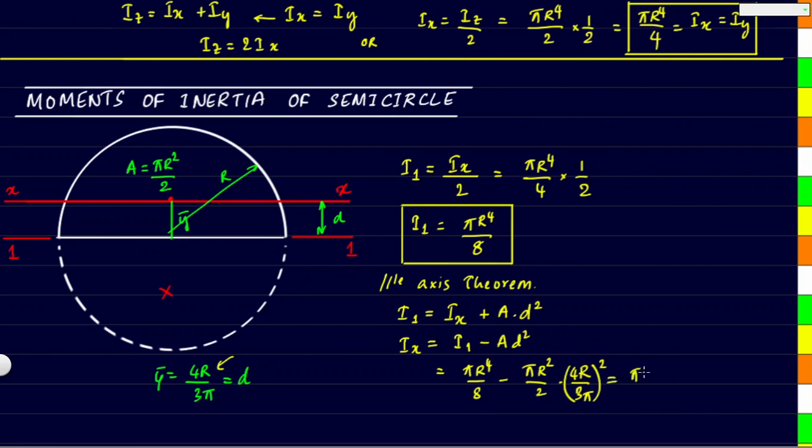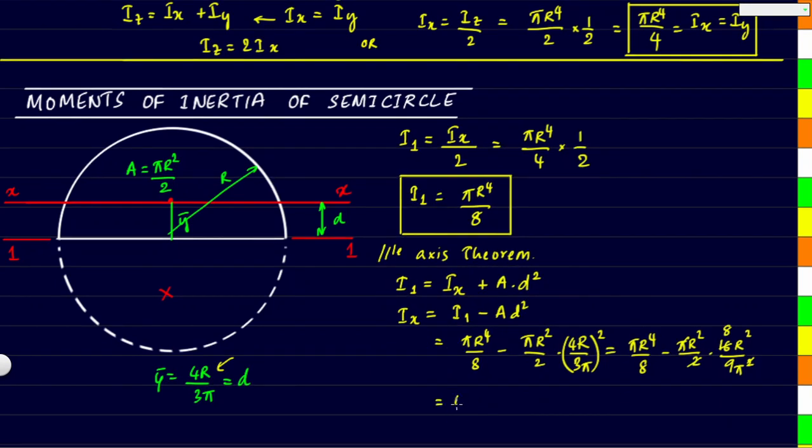Opening the brackets will give us πr⁴/8 as it is minus πr²/2 times 16r²/9π², so one π will cancel out here and 2 will cancel out with this leaving as 8. If we take the common terms outside, that common term being r⁴, we get π/8 minus 8/9π.